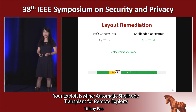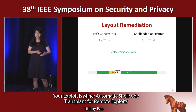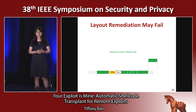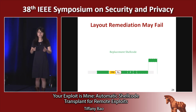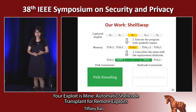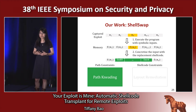However, layout remediation may fail. When we add those jump instructions and skip memories that might contradict the path constraints, we miss many spaces. In the end, we do not have enough space to put all the instructions in the shellcode. In this case, we look back at the path constraints to find those superfluous constraints and try to resolve them. We call this step path knitting.